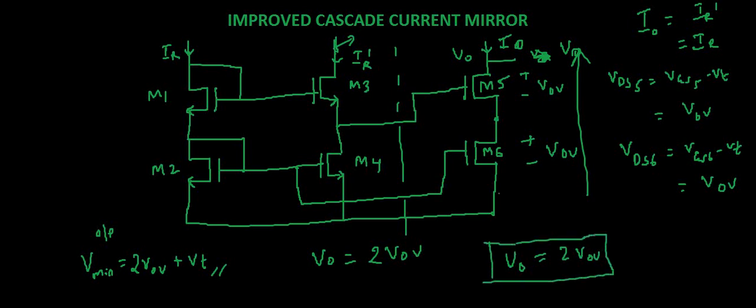So this is the improved cascade current mirror circuit. There are various types of current mirrors you can look up on the internet. If I have time I will discuss Wilson's current mirror circuit as well. The basic working of current mirror and what is cascade current mirror,